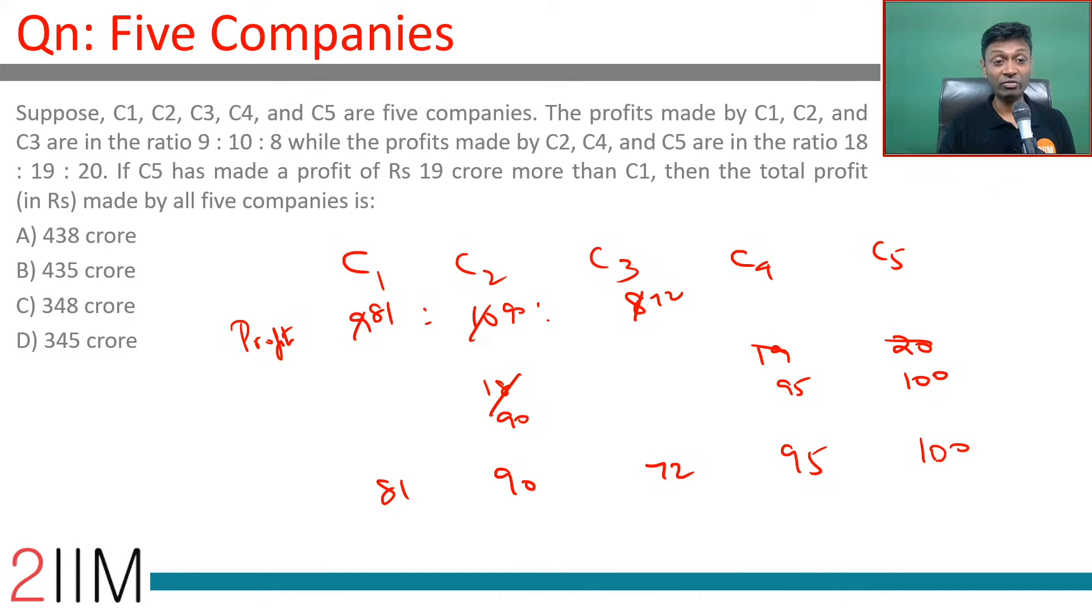C5 has made a profit of 19 crore more than C1. This is 81, 90, 72, 95, 100. The difference: 100 minus 81 is exactly 19.